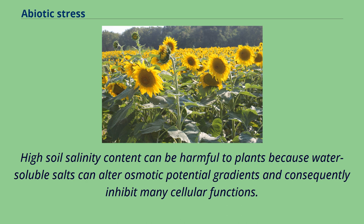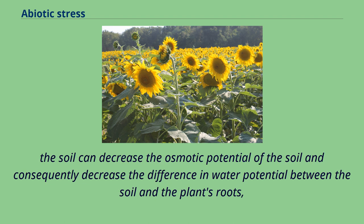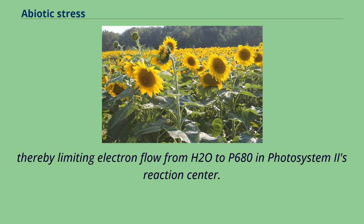For example, high soil salinity content can inhibit the process of photosynthesis by limiting a plant's water uptake. High levels of water-soluble salts in the soil can decrease osmotic potential and consequently decrease the difference in water potential between the soil and the plant's roots, thereby limiting electron flow from H₂O to P680 in Photosystem II's reaction center. Over generations, many plants have mutated and built different mechanisms to counter salinity effects.